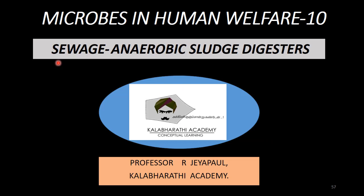In this method, in sewage treatment, we use anaerobic bacteria. Organic matter is digested. So, in the anaerobic sludge digester, the sludge — activated sludge — is a floc of bacteria with fungal filament. That anaerobic bacteria completely digests it.